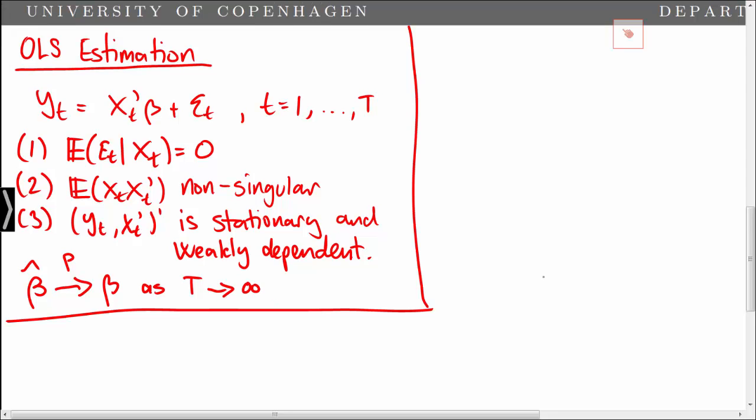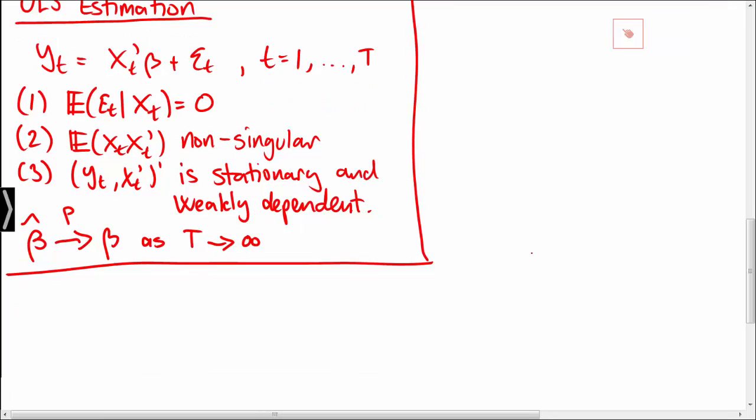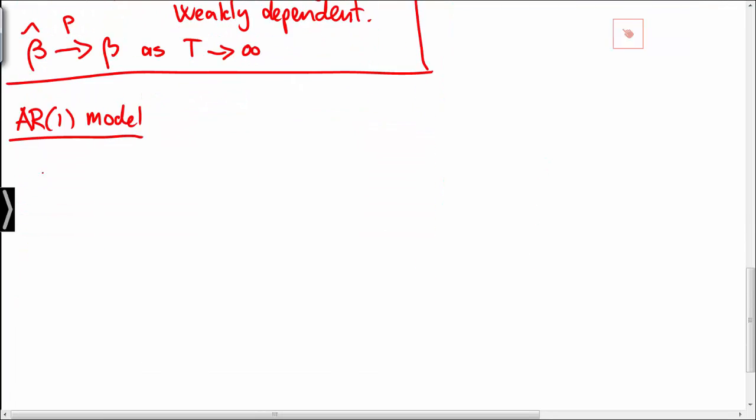Next we turn to the autoregressive model of order 1. Recall that yt is equal to phi times yt minus 1 plus epsilon t for t equal to 1 up to capital T.